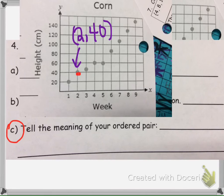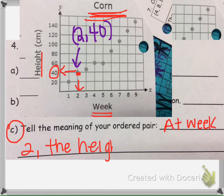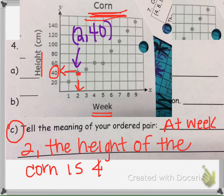So in this ordered pair, the 2 here represents weeks. So I would say at week 2, and then this represents 40 for the height of the corn. So the title tells us it's the height of corn right here, the height. So at week 2, the height of the corn is 40 centimeters.